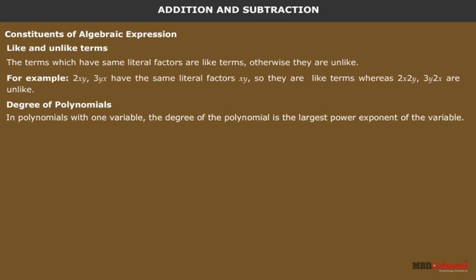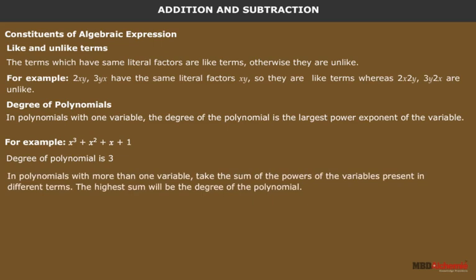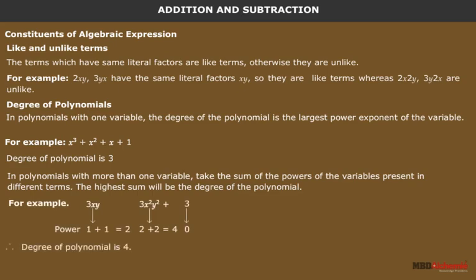Degree of polynomials: in polynomials with one variable, the degree of the polynomial is the largest power or exponent of the variable. For example, for x cubed plus x squared plus x plus 1, the degree is 3. In polynomials with more than one variable, take the sum of powers of the variables present in different terms — the highest sum will be the degree of the polynomial.